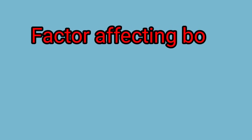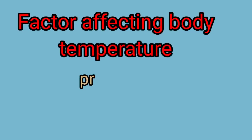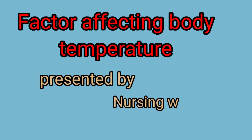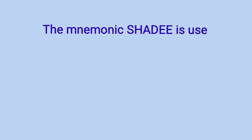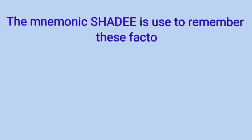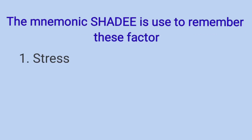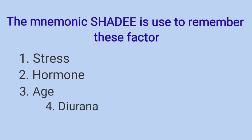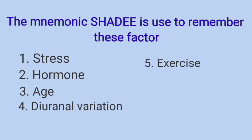Factors Affecting Body Temperature, presented by Nursing with Umar. The mnemonic SHADY is used to remember these factors. The first one is stress, the second is hormone, the third is age, the fourth is diurnal variation, the fifth is exercise, and the sixth and last one is environment. Now I will discuss each one by one in detail.